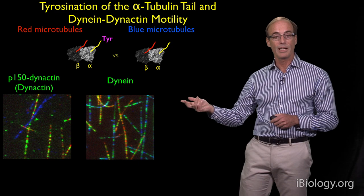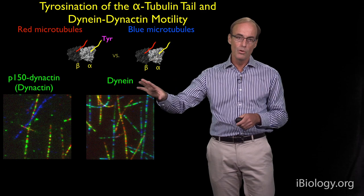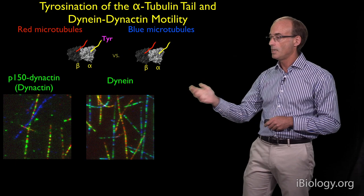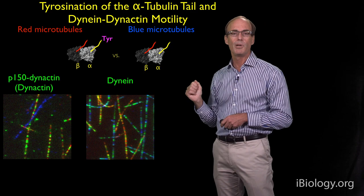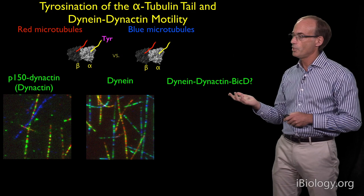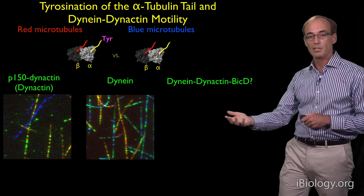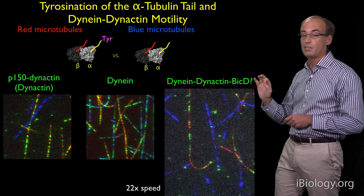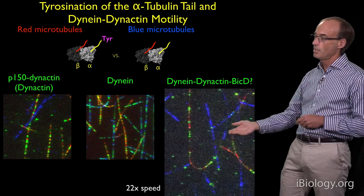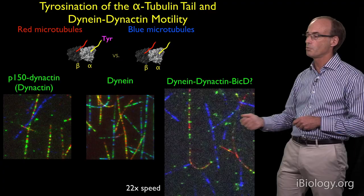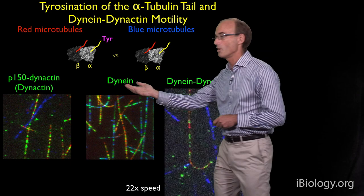We tested this also for dynein, again labeled in green. Dynein on its own does not really move along microtubules, so we examined its microtubule binding properties in a static image. We found that dynein doesn't really have much preference between either of these tracts — it binds to both. So the question is: if we look at the whole complex together, would it look more like dynein or would it look more like dynactin? The result is quite striking. You can see that there are lots of individual dynein-dynactin molecules moving along the tyrosinated microtubules, but there's very little motility occurring on the blue microtubules without the tyrosine. So the motility seems to behave much more like the P150 binding properties than dynein alone.